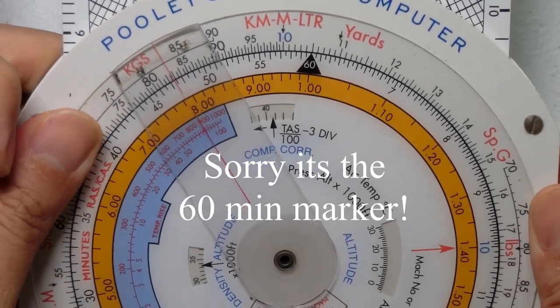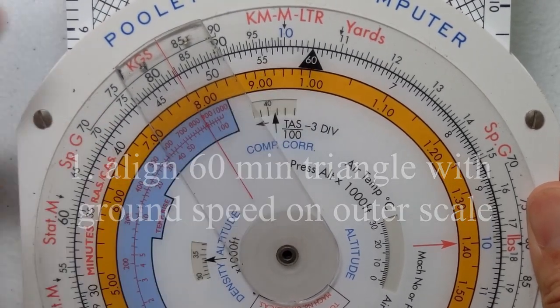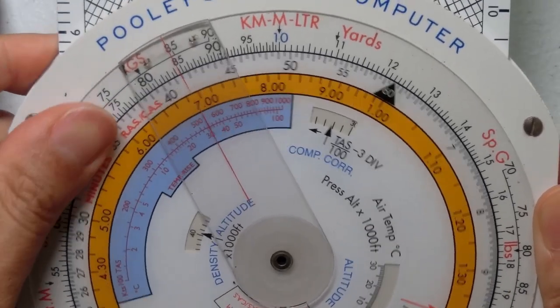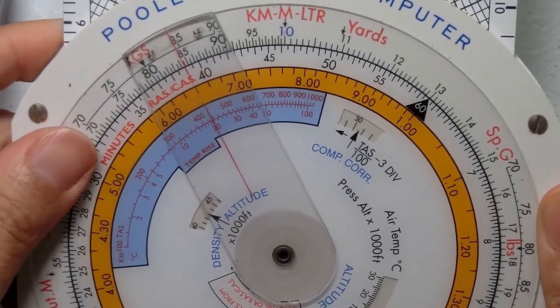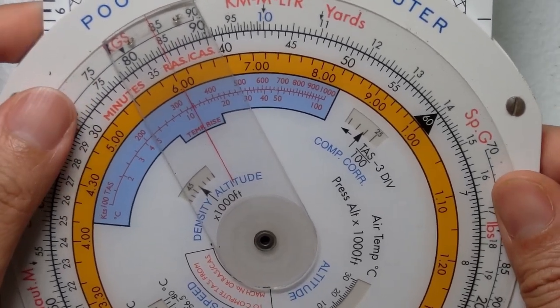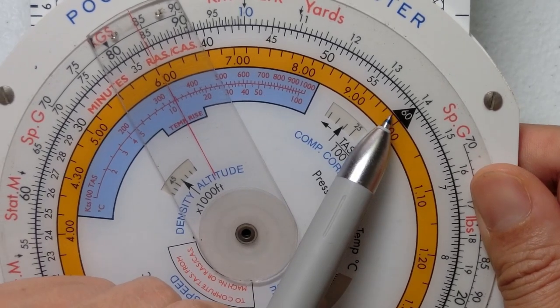I'm going to take my 60 all the way up to 140, because that's my speed. My ground speed is 140, so I would cover 140 nautical miles in 60 minutes. Then I want to know how long will it take me to cover 84 nautical miles.